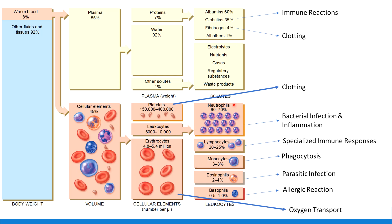When we talk about neutrophils, the big thing they do is fight off bacterial infections. They're also the first one on the scene, so they start the process of inflammation. Although what's much better at causing inflammation are the very few basophils in the blood. Basophils spit out histamine, which is what causes allergic reactions and inflammation. Basophils' granules stain dark purple or blue.